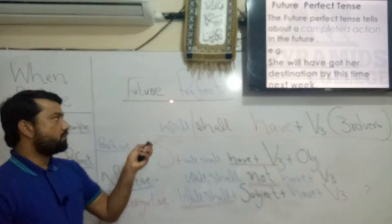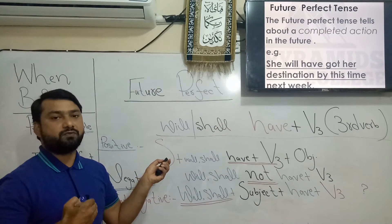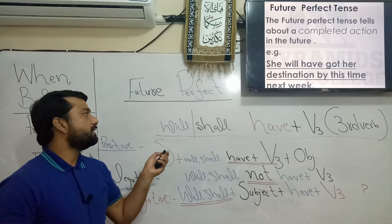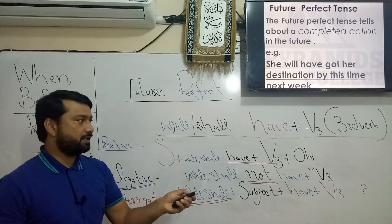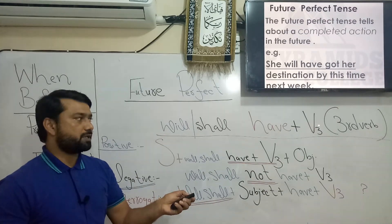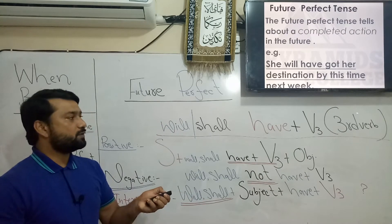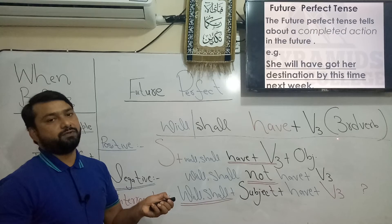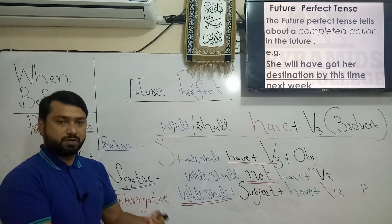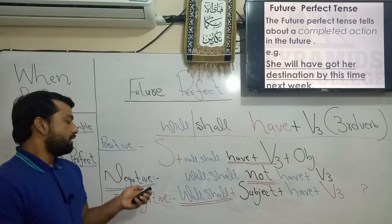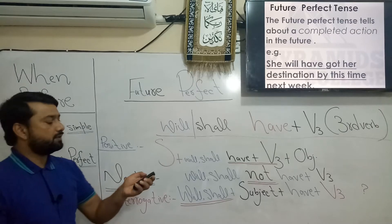As you know from present perfect and past perfect, whenever there is a word 'perfect' we are going to use past participle — in other words, we are going to use the third form of the verb, V3: completed, spoken, gone. So how to make positive, negative, and interrogative sentences — I will show you.